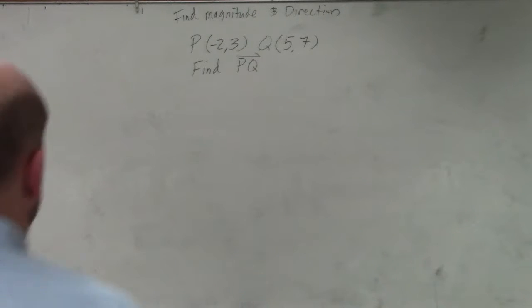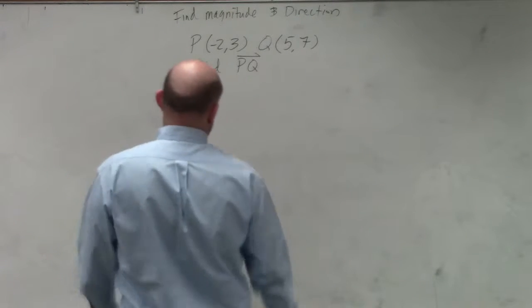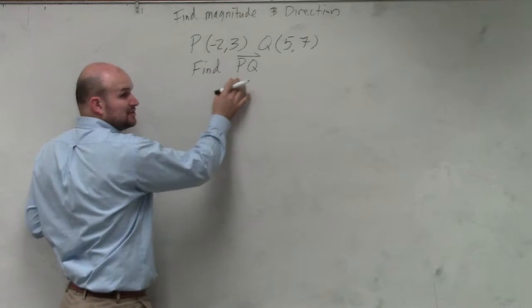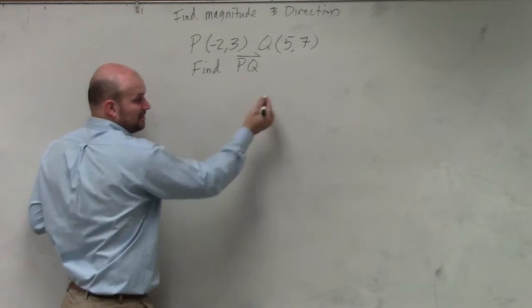in lines and rays that we've talked about. But what we're doing is we're traveling from P to Q. That means P is my initial point, and Q is going to be my terminal point.